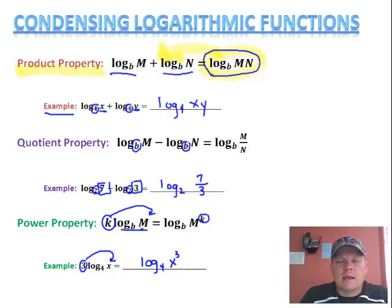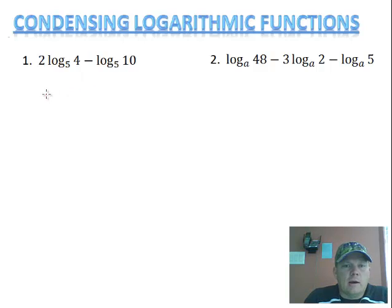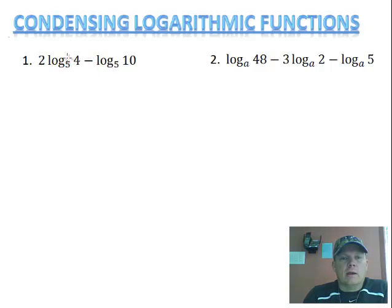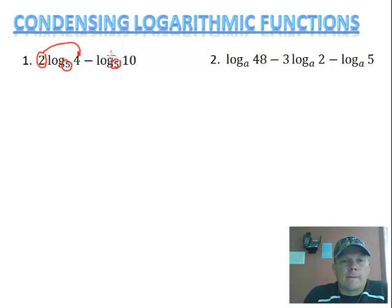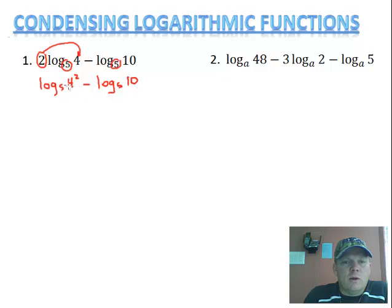Those are the rules, and next we're going to work some examples using these rules. Our first example — you can follow along in your notes — we have 2 log base 5 of 4 minus log base 5 of 10. Before I can start condensing, I need to make sure they have the same base — they're both log base 5, so I'm allowed to start working it. I have this 2 that I need to move to be the exponent for 4, so I'm going to rewrite this first one as log base 5 of 4 to the second power, then minus log base 5 of 10. Now I can rewrite 4 to the second power as 16 — 4 times 4 is 16 — so I have log base 5 of 16 minus log base 5 of 10.